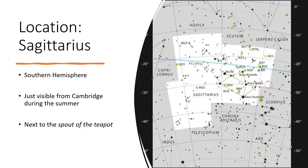So Sagittarius, a constellation, is in the southern part of the sky. It's just visible from my observing site here in Cambridge in the summer months when it just clears the hedge. It's supposed to represent an archer, but whenever I look at it all I can see is a teapot.